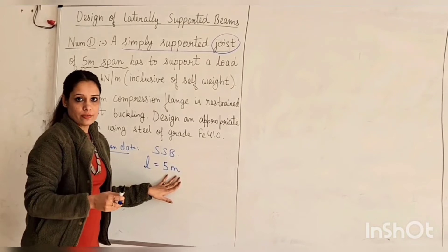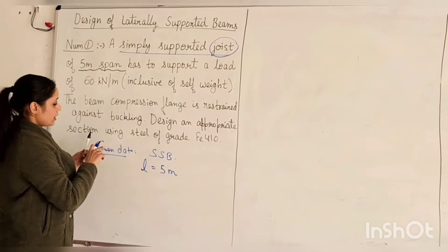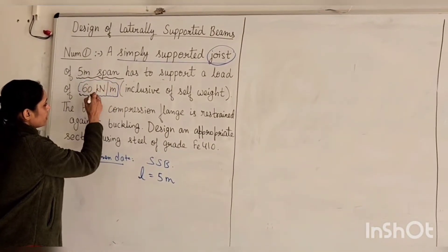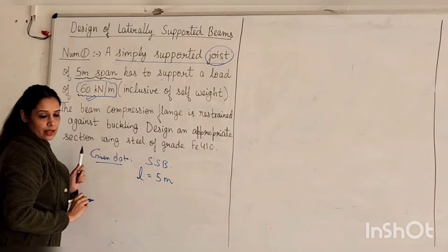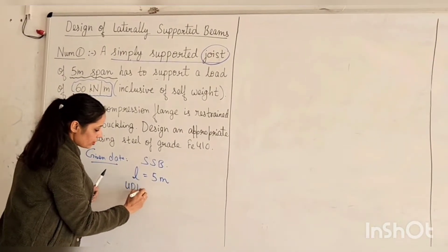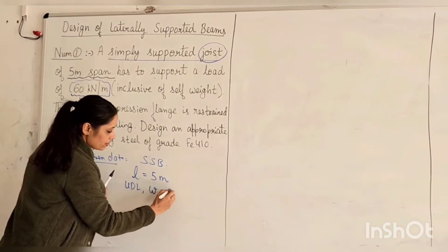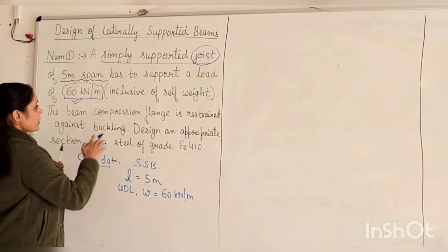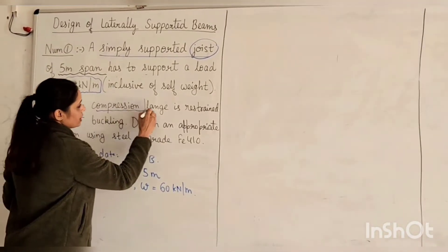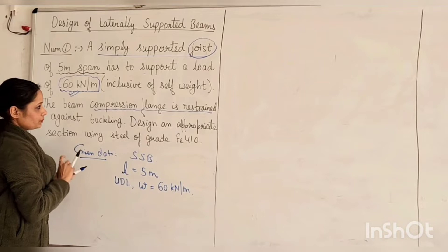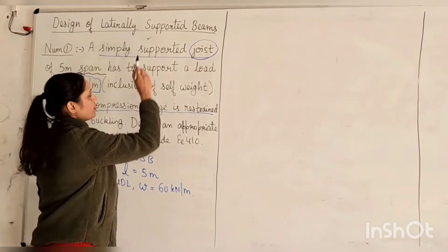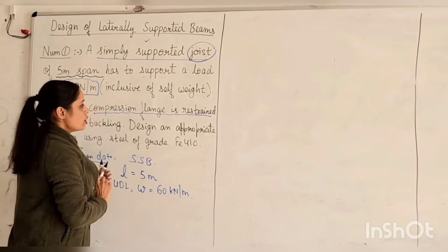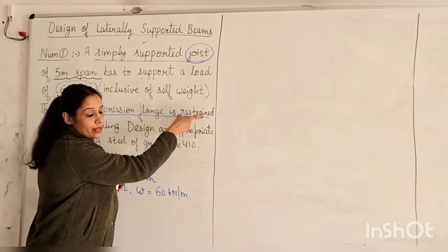To support a load of 60 kilonewton per meter. This is UDL. The beam compression flange is restrained.